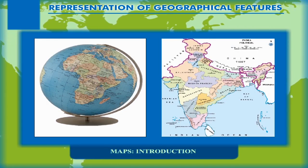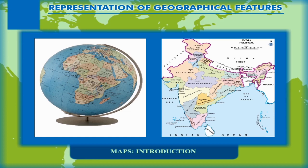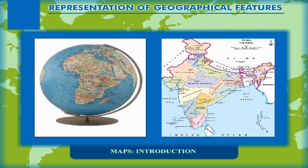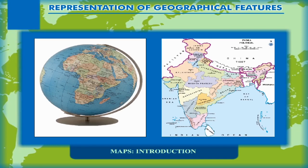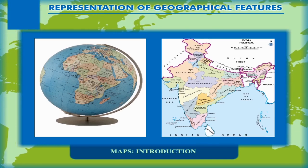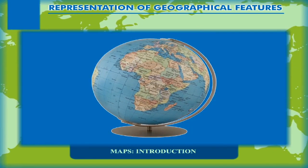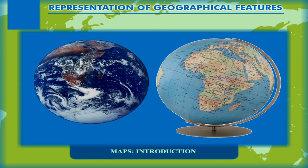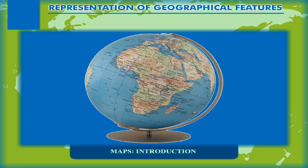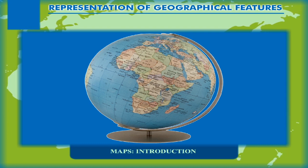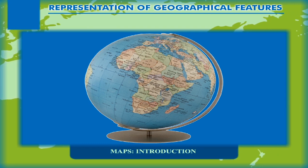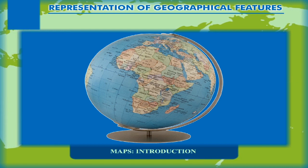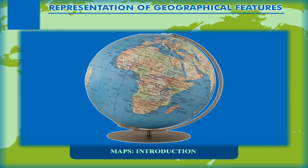Globes and maps are two important tools of geography. Both are very useful in studying the earth's surface. Globes, which are spherical in shape, are the exact replica of the earth. As globes are of the same shape as the earth, they represent the shape of the landmass and water bodies with great accuracy.